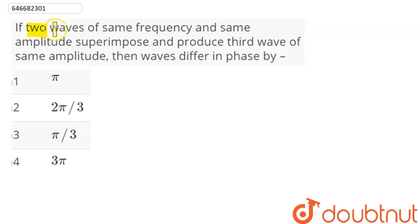Question: If two waves of same frequency and same amplitude superimpose and produce a third wave of same amplitude, then the waves differ in phase by—